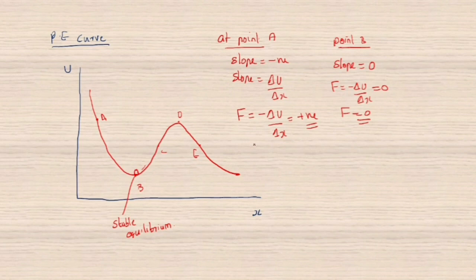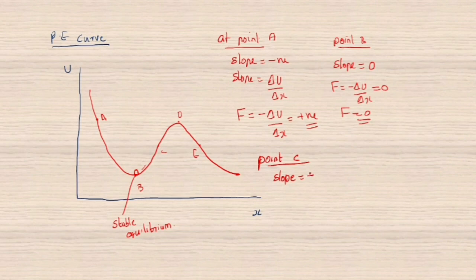Now consider point C. At point C, the slope is positive. If slope is positive, then F = −ΔU/Δx gives a negative force. A negative force means the force acting there is an attractive force.